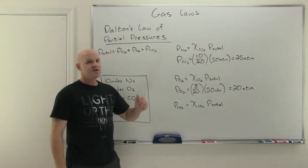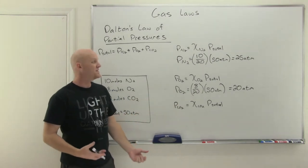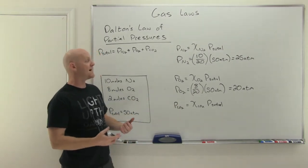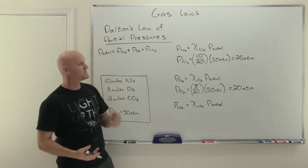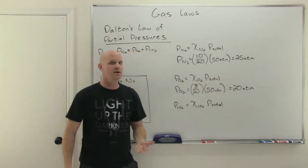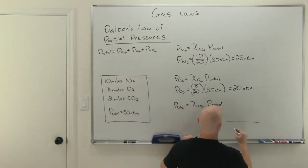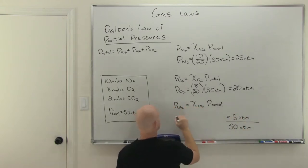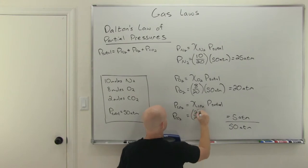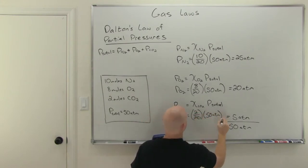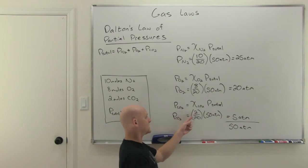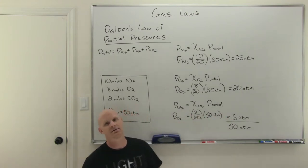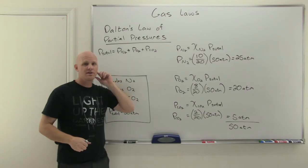Finally for CO2, we could calculate this the same way, but we don't need to because we know the individual partial pressures have to add up to a total of 50 atmospheres. If N2 is 25 and O2 is 20, then the remaining amount needed to reach 50 atmospheres is 5 atmospheres. We could also calculate it directly: PCO2 equals the mole fraction of CO2, which is 2 out of 20, times 50 atmospheres — 2 out of 20 is 10%, and 10% of 50 is indeed 5 atmospheres. This is Dalton's law of partial pressures.